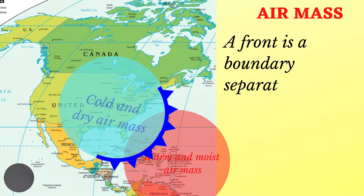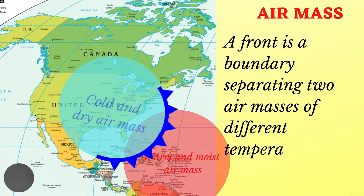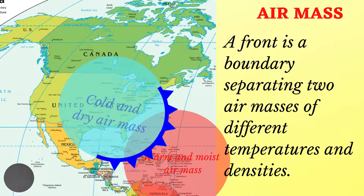When we talk about a front, we are talking about a boundary which separates two air masses of different temperature and humidity characteristics. And because they have different temperatures, they also have different densities.